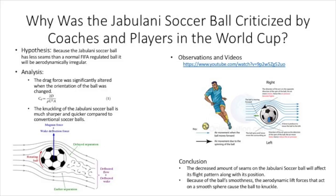The most common soccer ball used in all types of events across the nation is a 32-panel ball made up of 20 hexagonal shapes and 12 pentagonal shapes. When these balls are sewn together, the inflation process makes these soccer balls a near-perfect sphere.